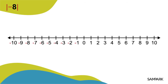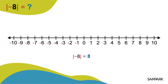अब माइनस 8 का निर्पेक्ष मान बताओ। माइनस 8, 0 से 8 मात्रक दूरी पर है, तो माइनस 8 का निर्पेक्ष मान 8 है। चूँकि निर्पेक्ष मान पूनांक की 0 से दूरी है, इसलिए निर्पेक्ष मान हमेशा धनात्मक होता है।